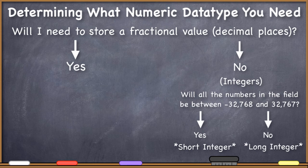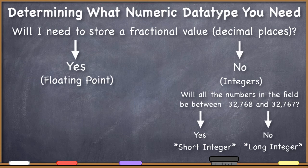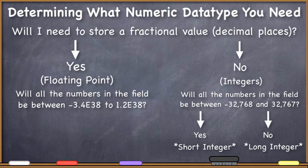For now, let's move on to say that you do need to store decimals, fractional values for your numbers. If that's the case, then the integer data type isn't going to help you, but you have two options. You can declare the field as a single precision floating point number, also known as just a float. And you can store numbers between negative 3.4e38 to 1.2e38.